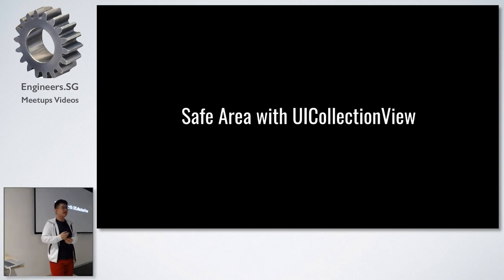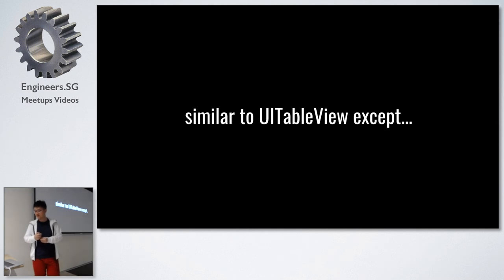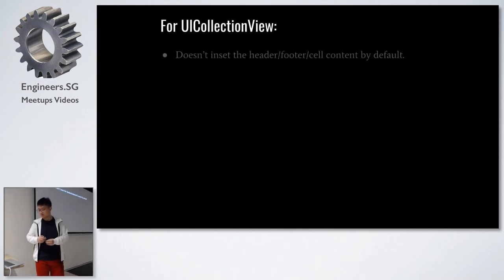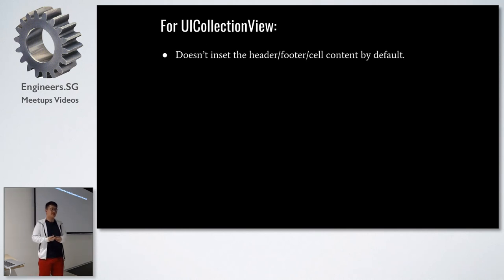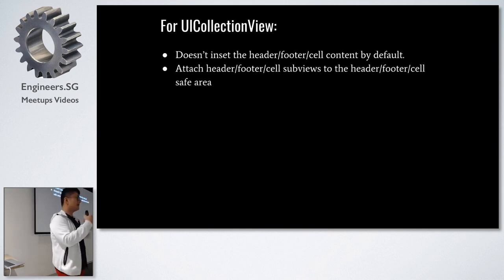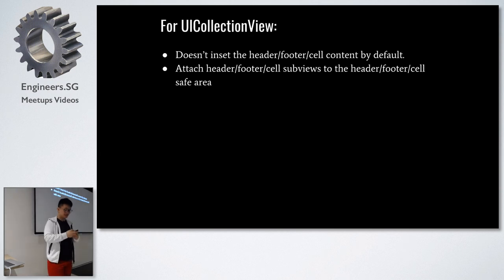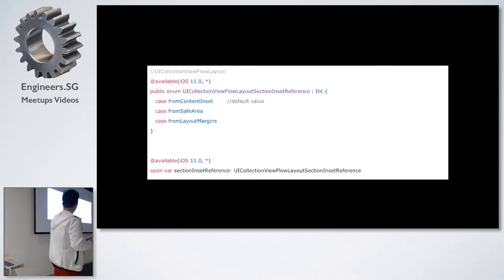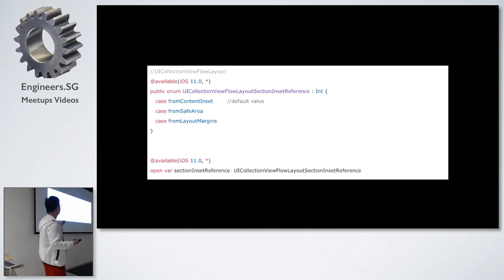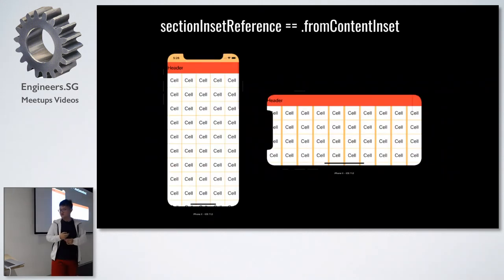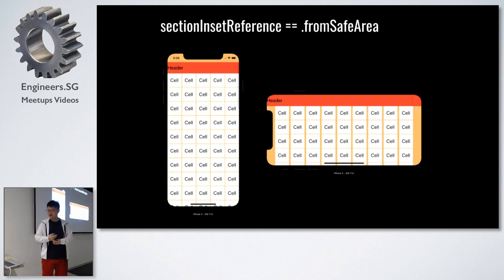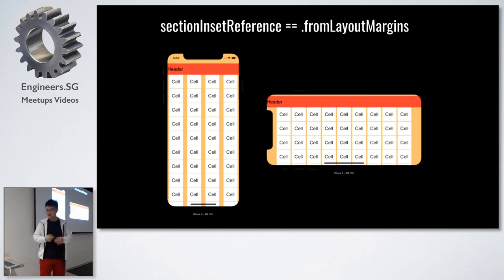How about collection view? Collection view is quite similar to table view except it doesn't respect the safe area by default. The only way to make your collection view cell respect the safe area is to manually do it from the cell level or reusable headers level — just make sure they respect the safe area of their superview. The collection view flow layout also has a new property `sectionInsetReference`, allowing section insets to be referenced from `contentInset`, `safeArea`, or `layoutMargins`.